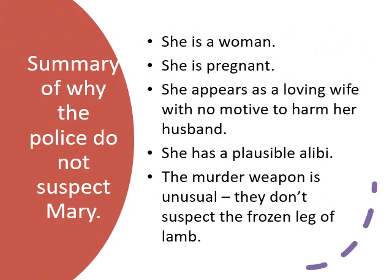Here's a summary of why the police do not suspect Mary. You'll see from the second extract that they're clearly looking for a male suspect. As Mary is a woman — and not only that, a pregnant woman — they perhaps see her as being too vulnerable or too weak to have committed such a violent crime. They also know Mary, as she is the wife of one of the policemen at their own precinct. They probably know her already as a loving wife who, as far as they know, doesn't have any motive to harm her husband. You'll see as well from the first extract that she does have a plausible alibi. And also, they're very puzzled about the murder weapon — they know it's been a big, heavy object, but because they're looking for a male suspect and they don't suspect Mary, they're not looking for the frozen leg of lamb.